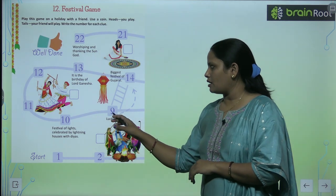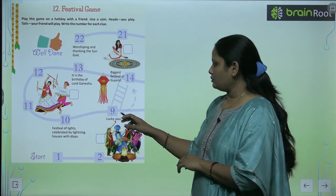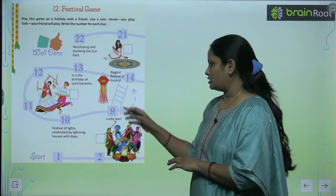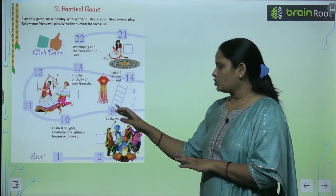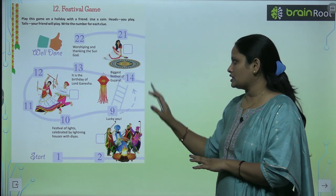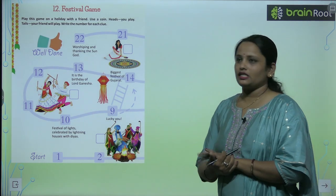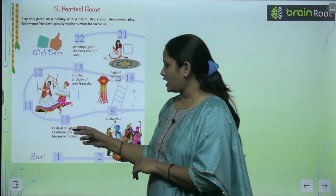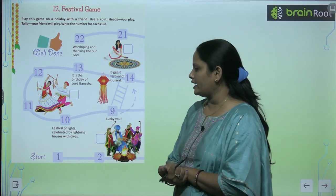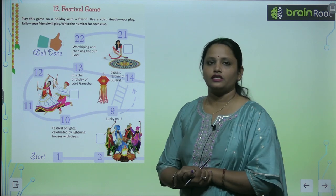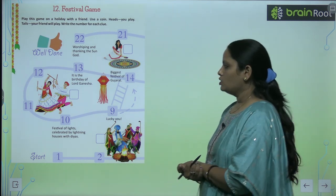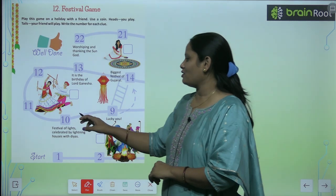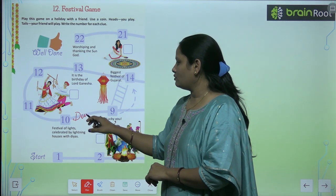After this comes nine — nine pe jo bhi aega, he has to move on these stairs, in seedhiyon se upar jana hai, fourteen pe chala jayega, and he has to tell the biggest festival of Gujarat. Aur ten pe — he has to tell the festival of lights, celebrated by lighting houses with diyas. The festival of light is Diwali!